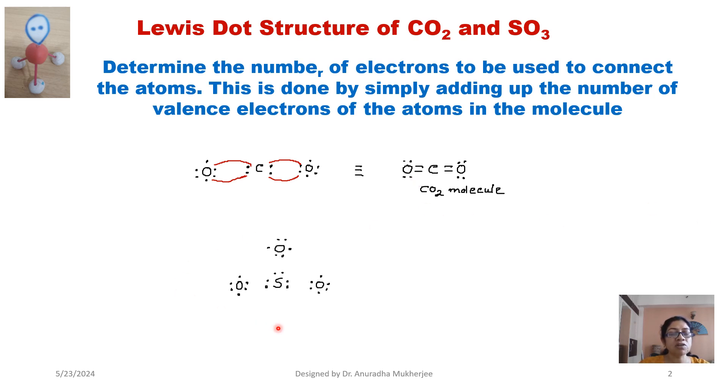For sulfur trioxide molecule, sulfur has six valence electrons. Oxygen is also six valence electrons. Sulfur is less electronegative than oxygen, so sulfur will be the middle element or central element. Now to fulfill the octet, oxygen will be sharing two electrons with the sulfur.